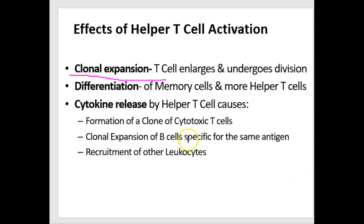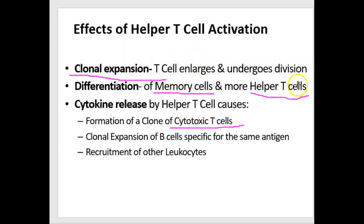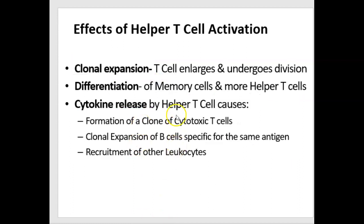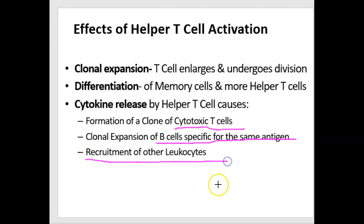Some of the clones will differentiate into memory T cells; others will become more helper T cells. We'll also get some cytotoxic T cells, because once the helper T cell becomes activated, it releases a whole bunch of cytokines even before clonal expansion happens, and those cytokines help form cytotoxic T cells from the clone. The cytokines also cause B cells specific for the same antigen to increase in number, and other cytokines recruit lots of other leukocytes.